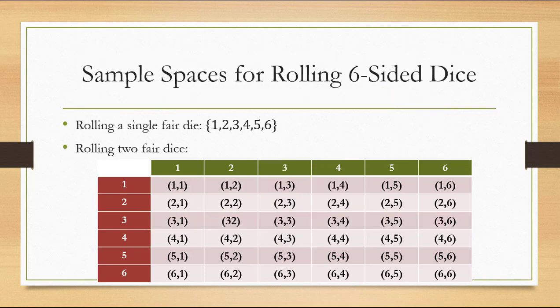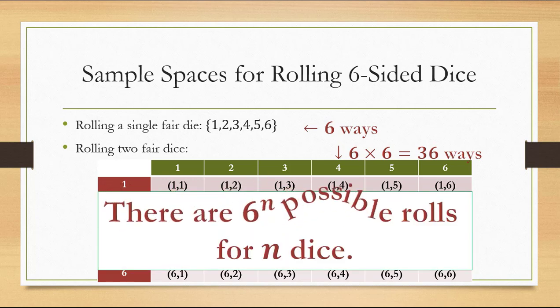What about rolling three fair dice? That would be a lot of possible outcomes and difficult to list them all. In general, for our class we usually stick to two dice in probability problems. But if we needed to know the sample space size for rolling three fair dice: for one die there are 6 outcomes, for two dice there are 6 times 6 equals 36, and for three fair dice there are 6 times 6 times 6. Each time you increase the number of dice by one, you multiply the number of possible outcomes by six. In other words, there are 6 to the n possible rolls for n dice.